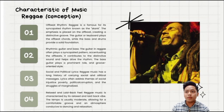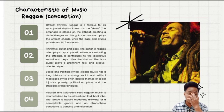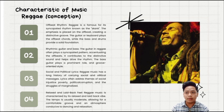Hello guys, my name is Erondia Wenmasu Ning, and I will continue our presentation and talk about the characteristics of reggae music in conception. The first one is reggae music's offbeat rhythm. As we all know, reggae is famous for its syncopated rhythm known as the skank. The emphasis is placed on the offbeat, creating a distinctive groove. The guitar or keyboard plays the offbeat chords while the bass and drums provide a solid foundation. The second one is rhythmic guitar and bass. The guitar in reggae often plays a syncopated pattern accentuating the offbeat. It contributes to the distinctive sound and helps drive the rhythm.